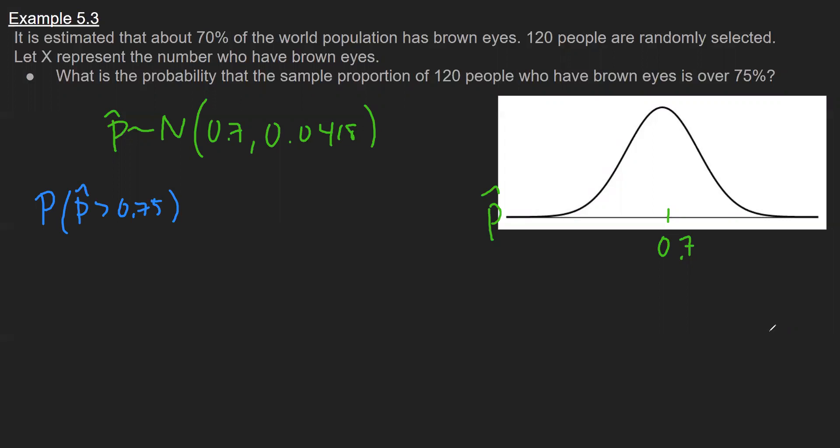For binomial problems, we have a binomial formula. For uniform problems, we draw that rectangle and find the area. For normal distribution problems, we're ultimately converting to z-scores. If I look at my graph, I have a bell curve because I know it's normally distributed. And 75% is going to be somewhere over here because it's centered at 0.7, and I want what's the chance I'm to the right of this. So this area right over here.